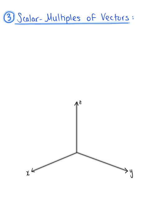Last but not least, we need to look at scalar multiples of a vector. We take vector u and multiply it by scalar c. This equals the constant c multiplied by the components of vector u: u sub 1, u sub 2, u sub 3. Applying the distributive property, we can rewrite this vector as c times u sub 1, c times u sub 2, c times u sub 3.